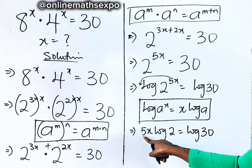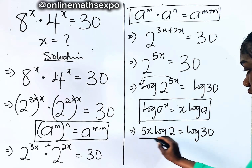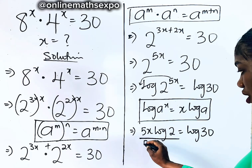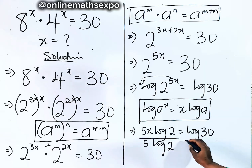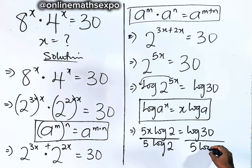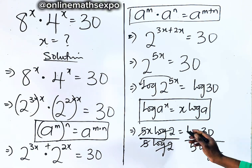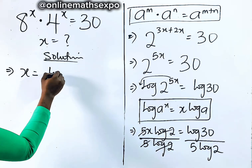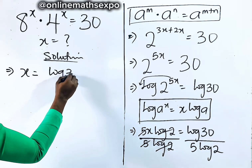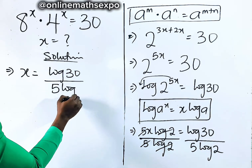Remember your target is x, and all these are multiplied together. So to get x, divide both sides by 5 and by log 2, so that the equation remains balanced. The 5 and the log 2 cancel on the left, and we're going to have x is equal to log of 30 divided by 5 log 2.